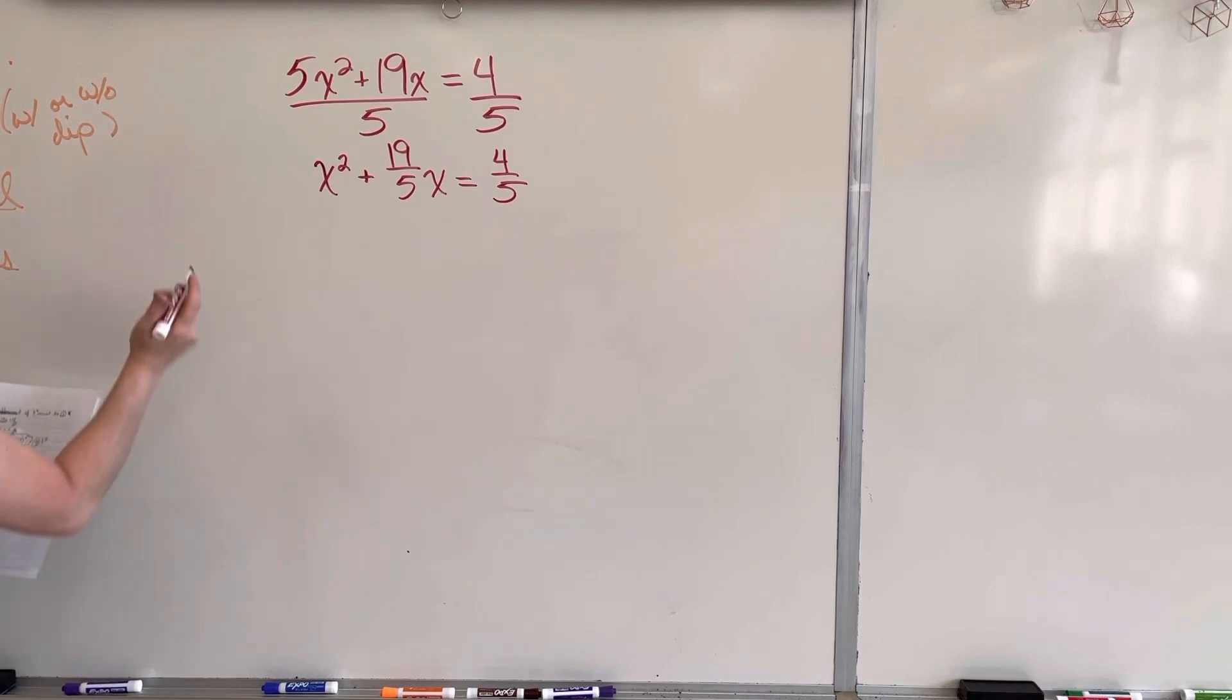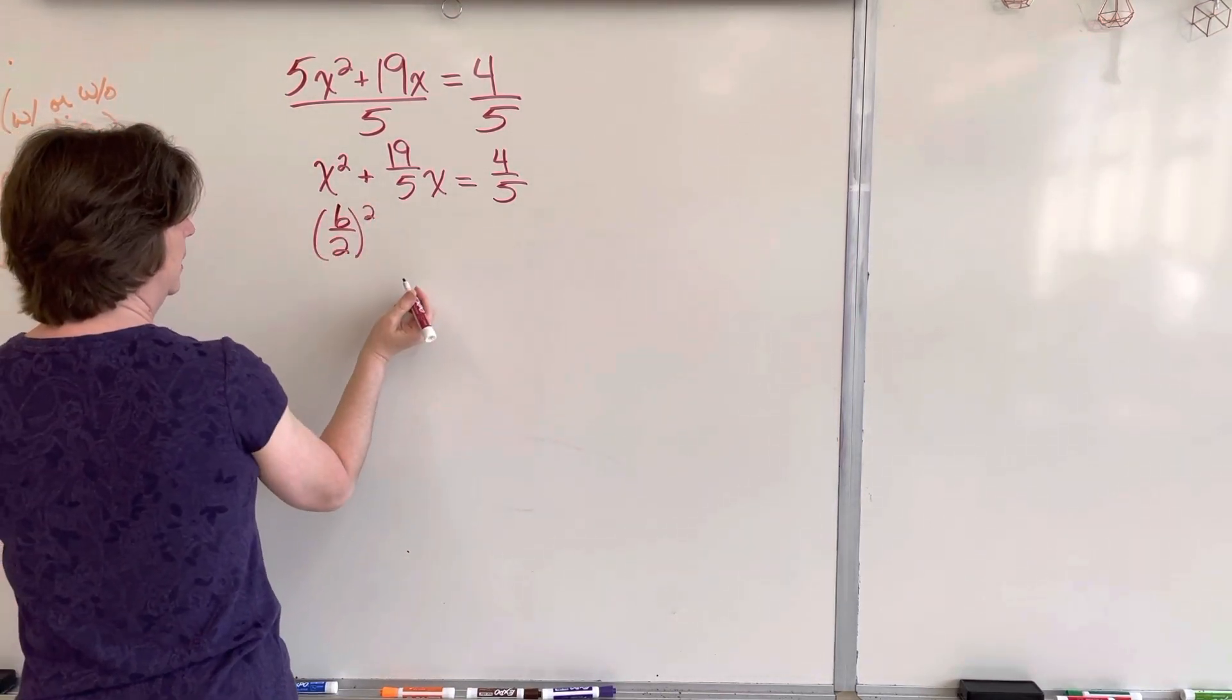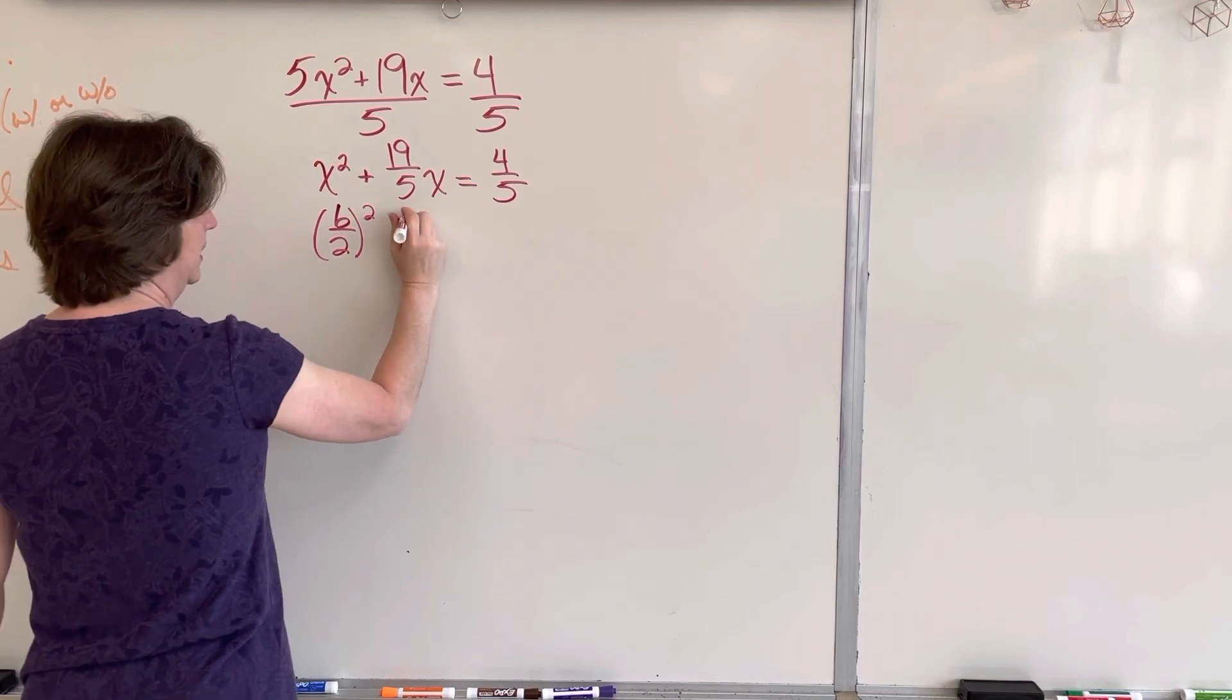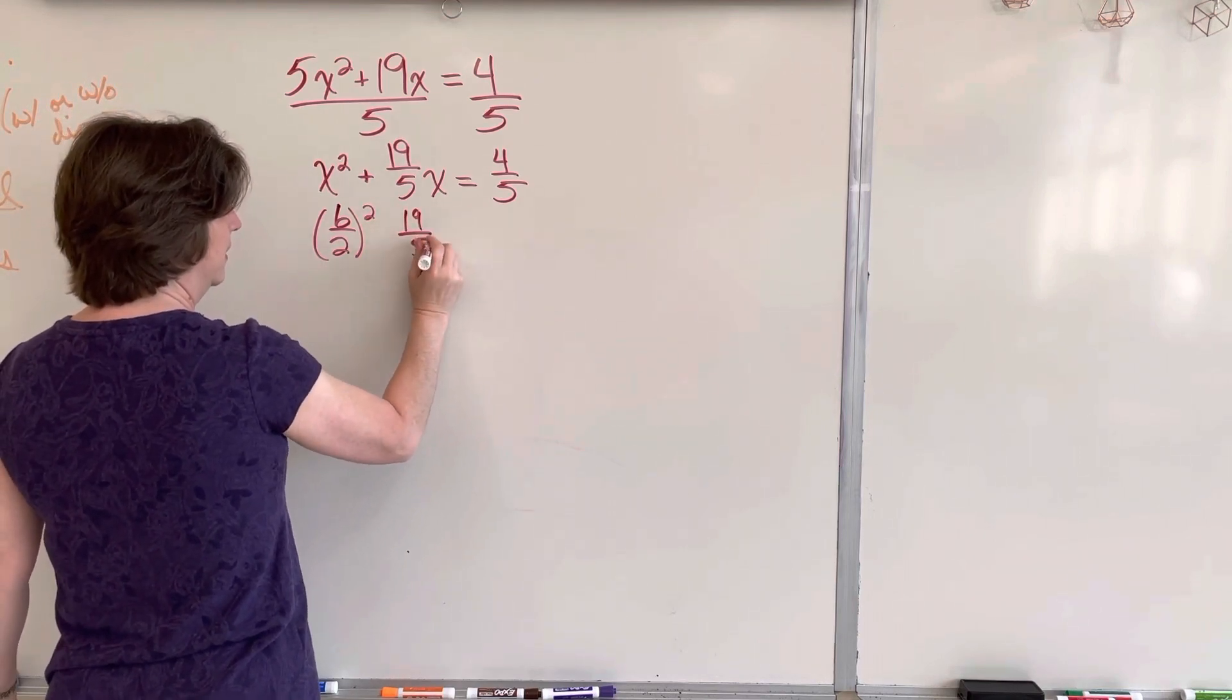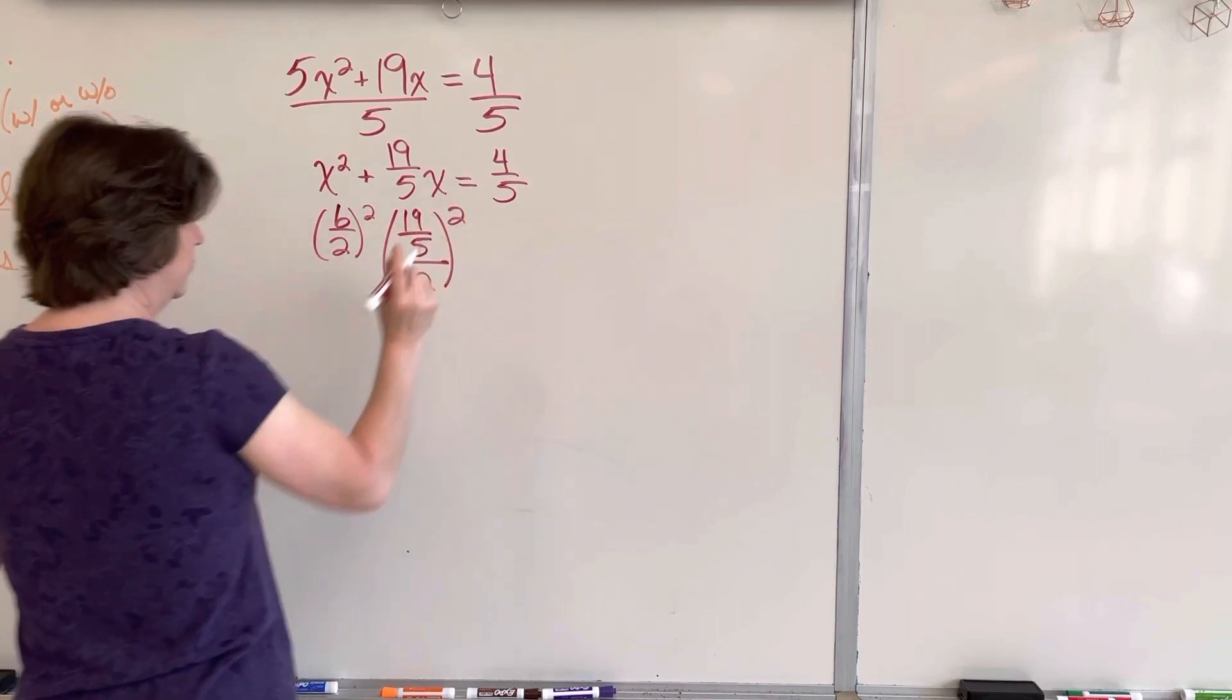So we still need to take our b over 2, b over 2, and square it. So b is 19 over 5, over 2, and square it.